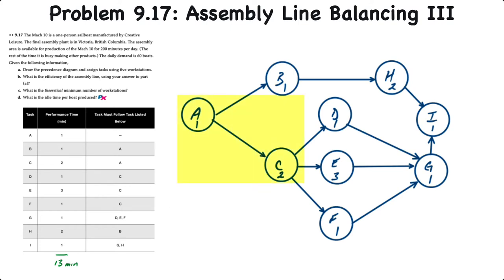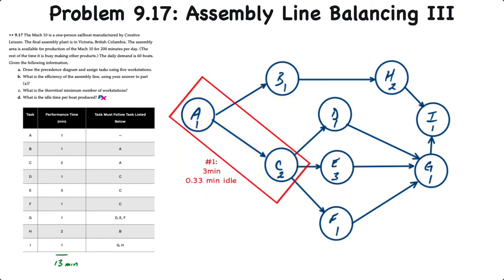If we look at the first tasks A, B, C, D, we can see that task A with a one-minute task time and task C with a two-minute task time can be combined into a workstation because they're in close proximity and A precedes C. So that'll be workstation number one with a three-minute cycle time. Next, tasks B and D, each with a task time of one minute, can be combined into workstation number two with a two-minute cycle time.